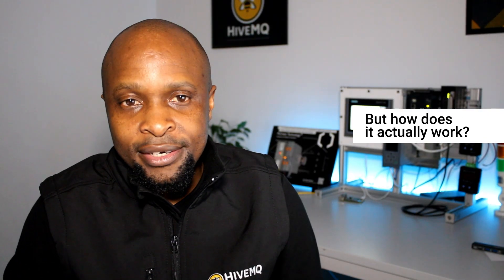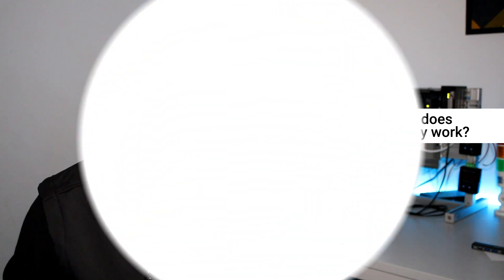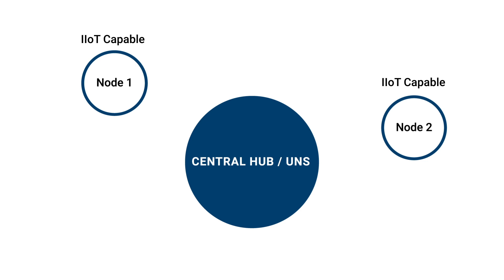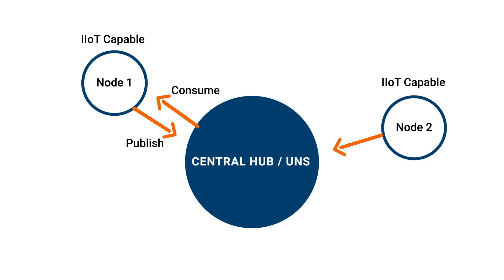But how does it actually work? The secret is to treat every smart device, machine, or piece of equipment that uses an IIoT communication protocol as a node in your ecosystem — a node that publishes data into a central hub, the UNS, and consumes from it. The data that the node publishes into the UNS becomes consumable by all parts of your organization, while the node also consumes from the UNS data published by other nodes.